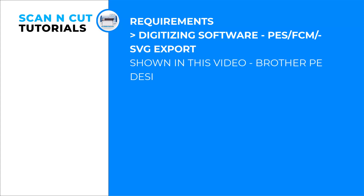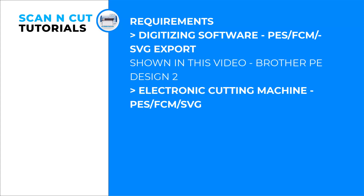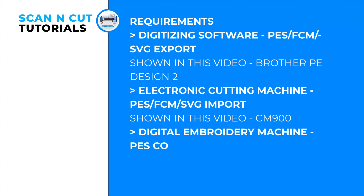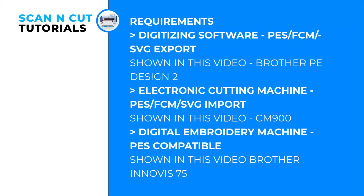There are some specific requirements for this particular technique. One is that your digitizing software must be able to export PES files and it must be able to export FCM or SVG files. Your cutting machine should also be able to read one of the three formats: PES, FCM, and SVG. And your digital embroidery machine must be able to read PES files.